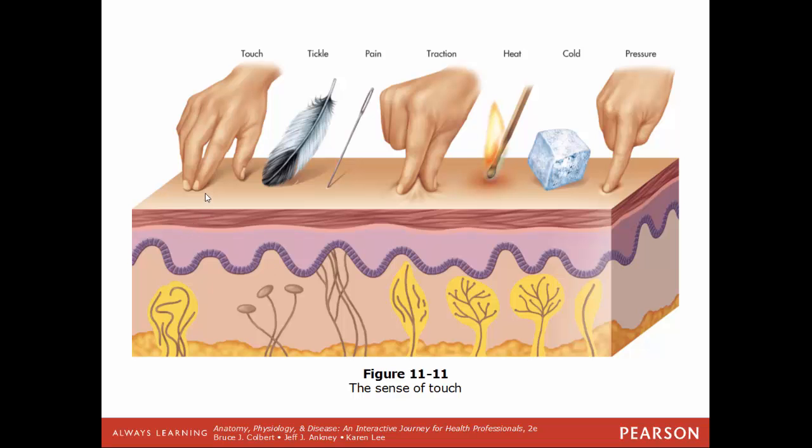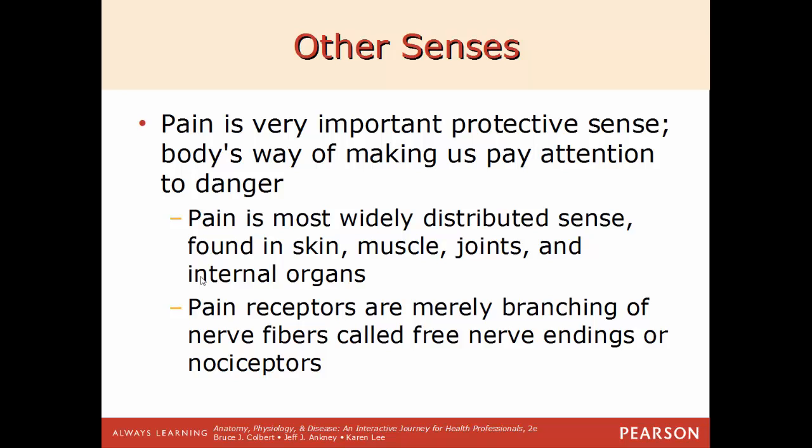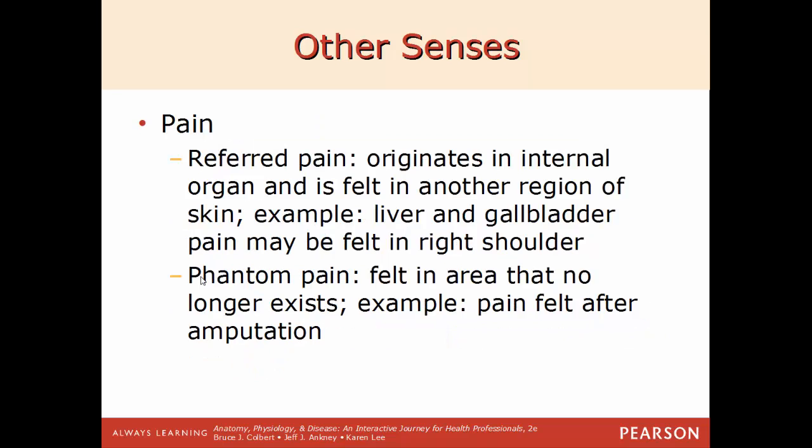Pain is a very important protective sense — it's the body's way of telling you to avoid danger. Pain receptors, formally called nociceptors, are widely distributed throughout the skin, muscles, joints, and internal organs via branching nerve fibers called free nerve endings. There are different types of pain: referred pain originates in an internal organ but is felt in another region of the skin — for example, pain in the gallbladder or liver may be felt in the right shoulder, and during a heart attack pain radiates down the left arm. Phantom pain is felt in an area that no longer exists, such as feeling pain in an amputated foot.